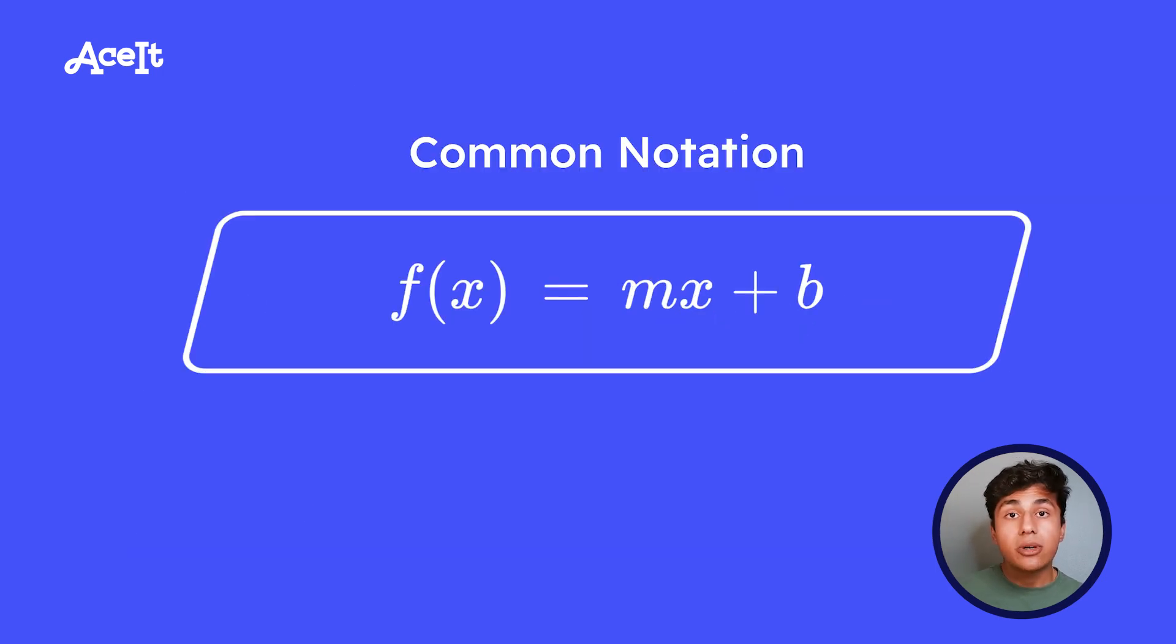Functions are commonly notated as something like f of x or g of x, where the variable is some sort of function of x, meaning that for whatever value of x you input, the function only has one specific value.